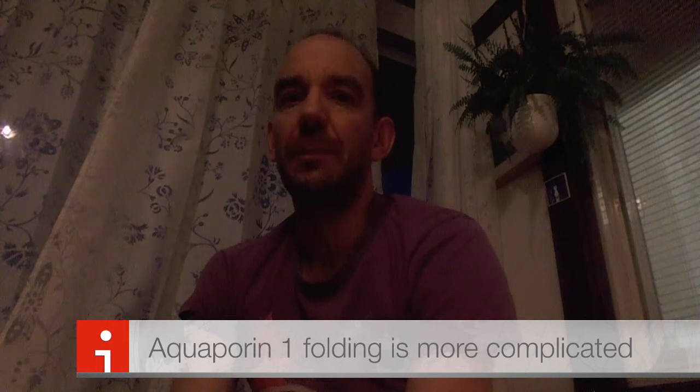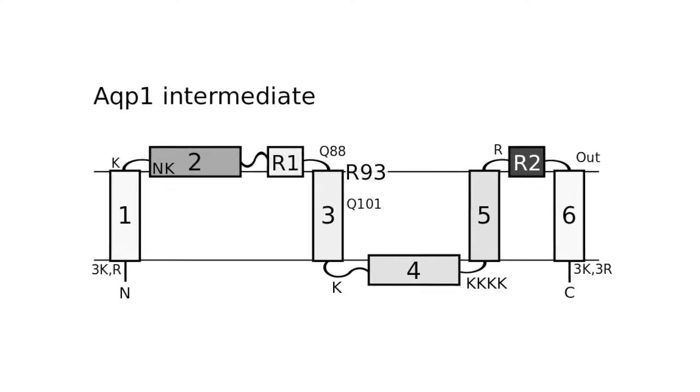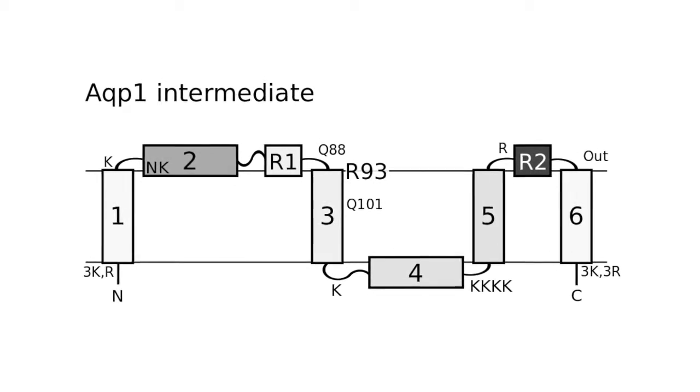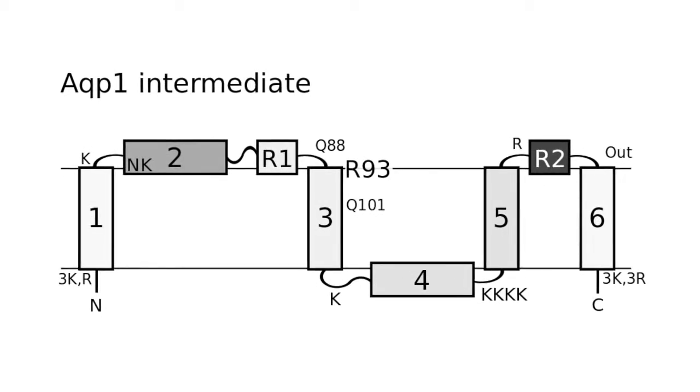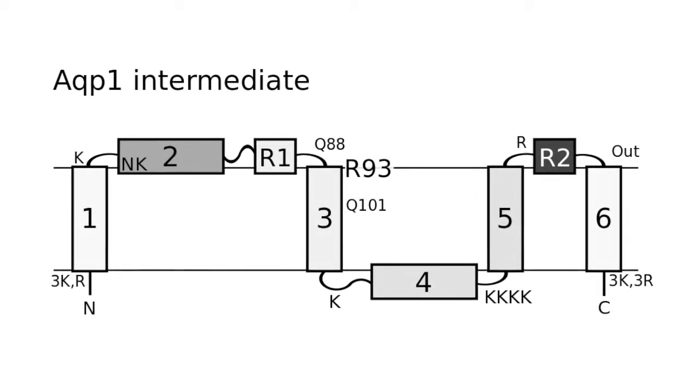Aquaporin-1 does not follow this standard two-step procedure of folding. How does it insert and fold? It is initially inserted as a helix intermediate, and then during folding two of the helices are inserted and helix-3 rotates 180 degrees. On the other hand, its close homolog aquaporin-4 is completely normal in its folding.